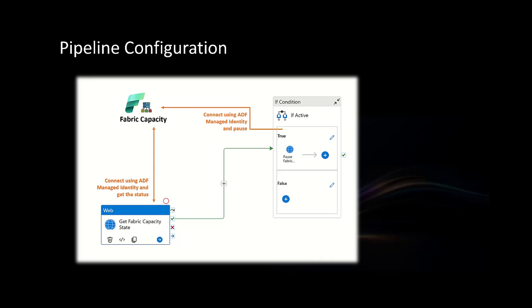How do we configure the Data Factory pipeline? You start with the web activity for calling the API. The first thing is to call the Fabric GET API for checking the state of the Fabric capacity. Whether you're checking the state, pausing, or resuming, you need to make sure the Data Factory account has enough permission to perform these operations against the Fabric capacity. The Azure Data Factory managed identity needs enough permission for performing these operations.